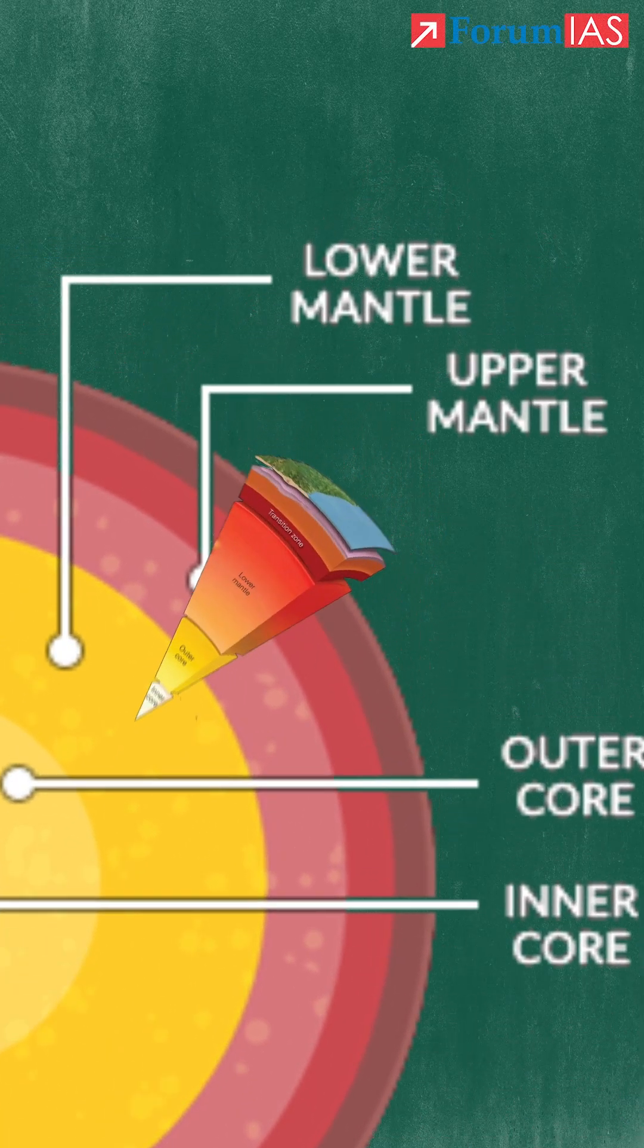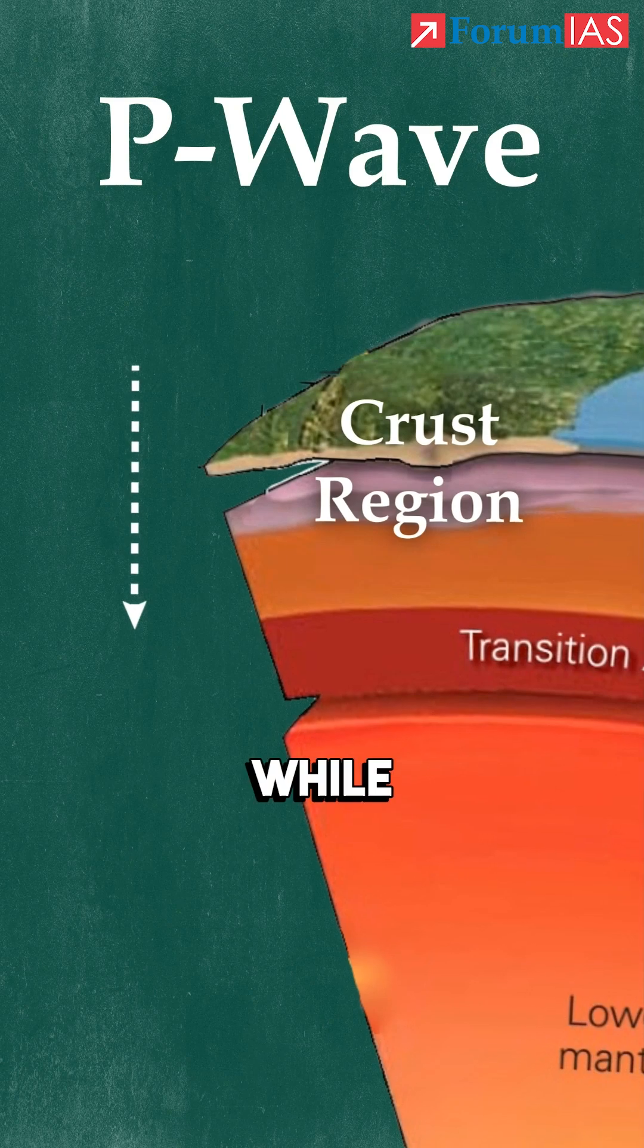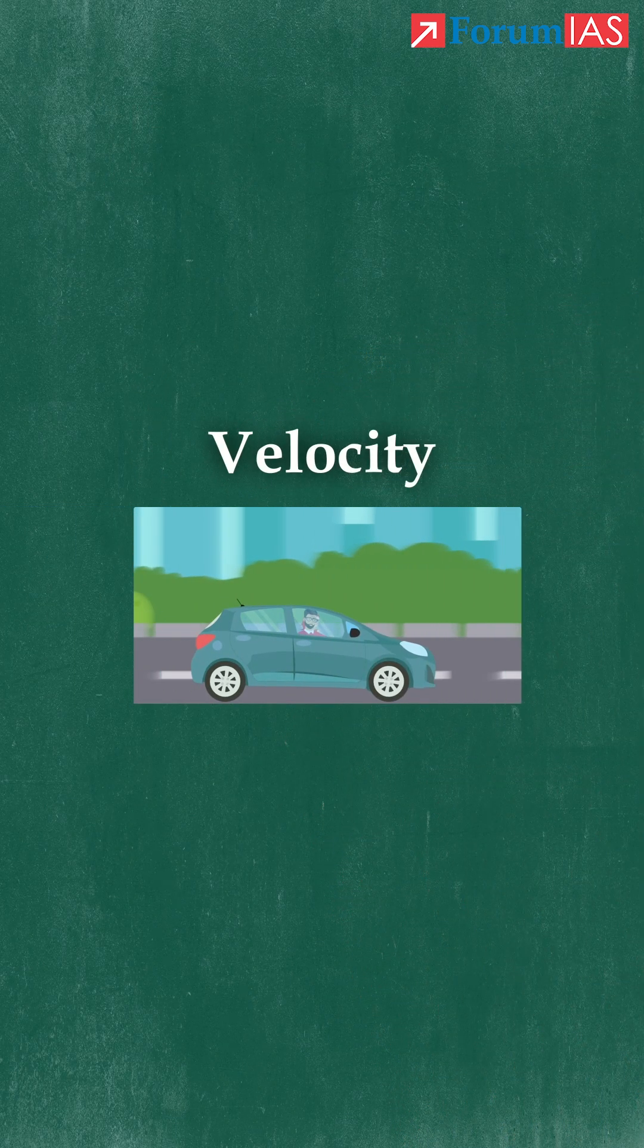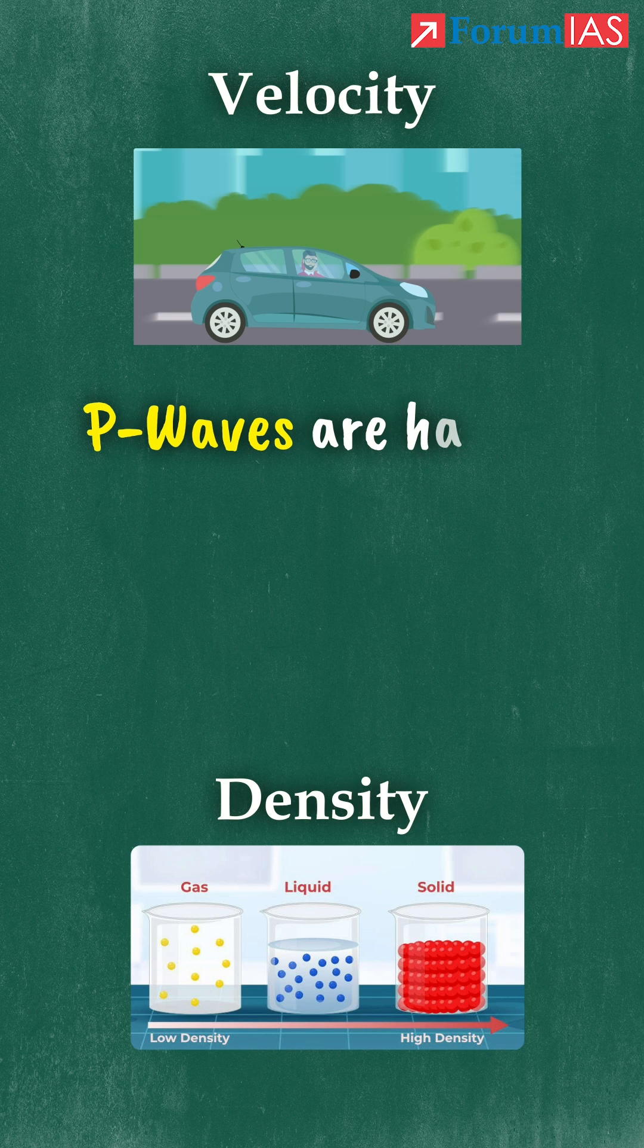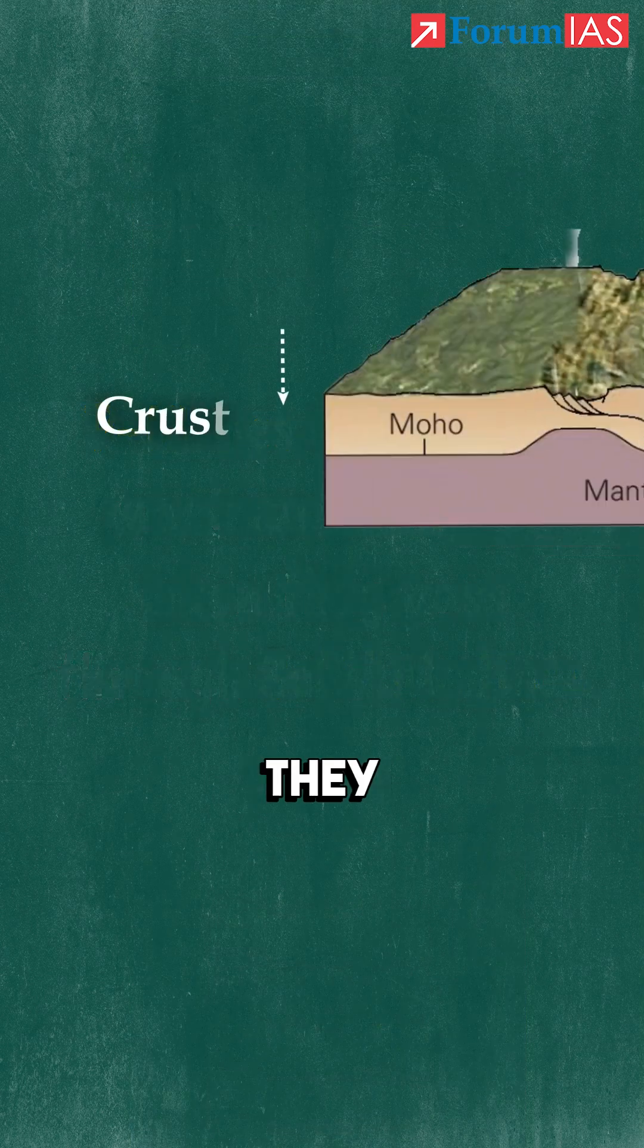We have taken the P-wave. Now what happens if we believe the P-wave while it was passing through the crust region? Its velocity—I'm taking here the density. P-waves have the maximum velocity when they pass through solid medium. When they were passing through the crust...